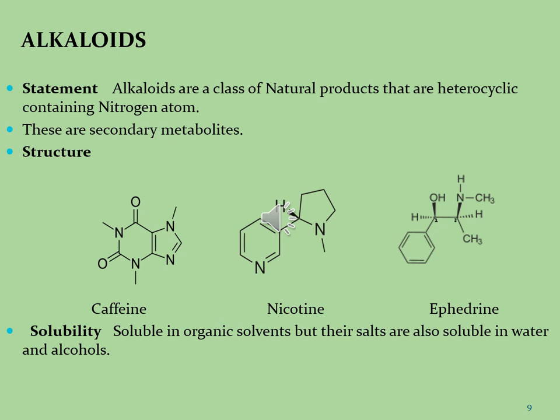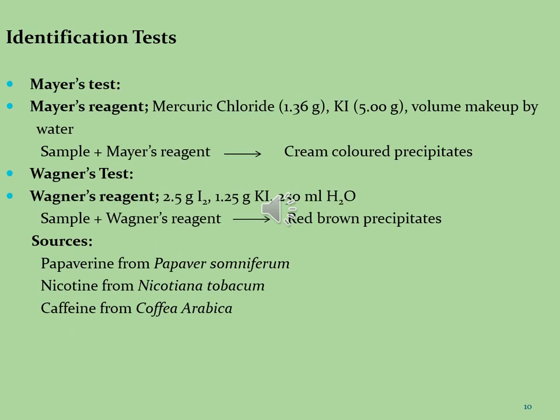Alkaloids are soluble in organic solvents, but their salts are soluble in water and alcohols. You can see the identification tests of alkaloid molecules. These tests are performed using different reagents. The first test is Mayer's test, in which Mayer's reagent is prepared using mercuric chloride (1.36 g) and potassium iodide (5 g), both dissolved in water and made up to 100 mL. The sample is dissolved in a few drops of Mayer's reagent, and we observe creamy-colored precipitates, which indicate the presence of alkaloid molecules.